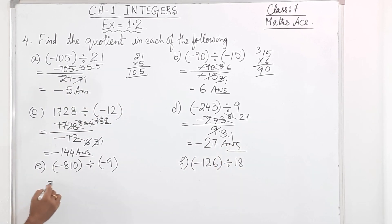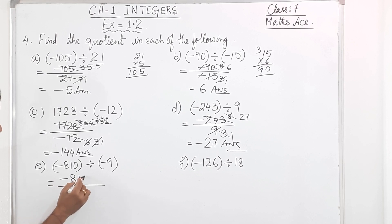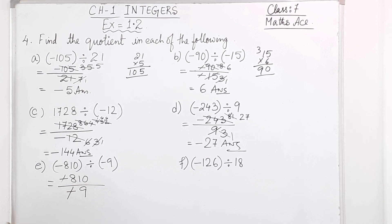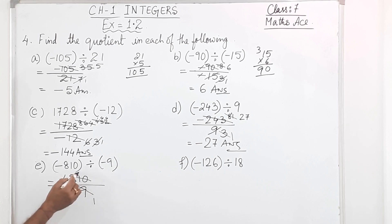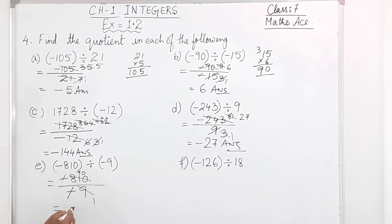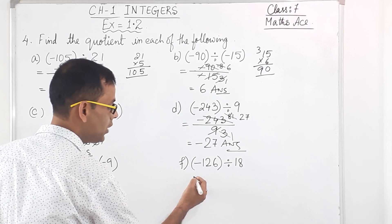Next one, E. In the numerator I write minus 810 and in the denominator minus 9. Minus minus cancels. 9 times 90 is 810 — 9 nines are 81, then bring down the zero. So the answer is 90.